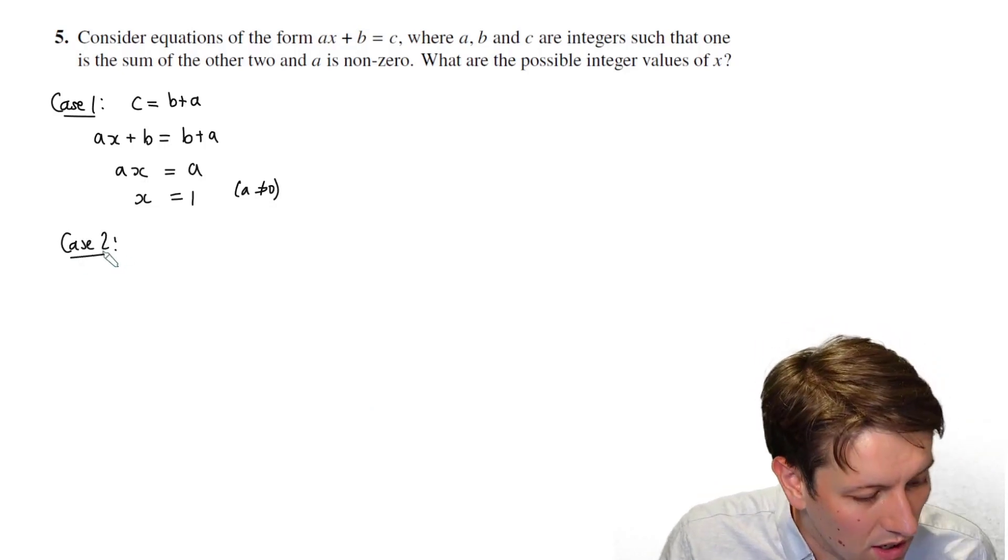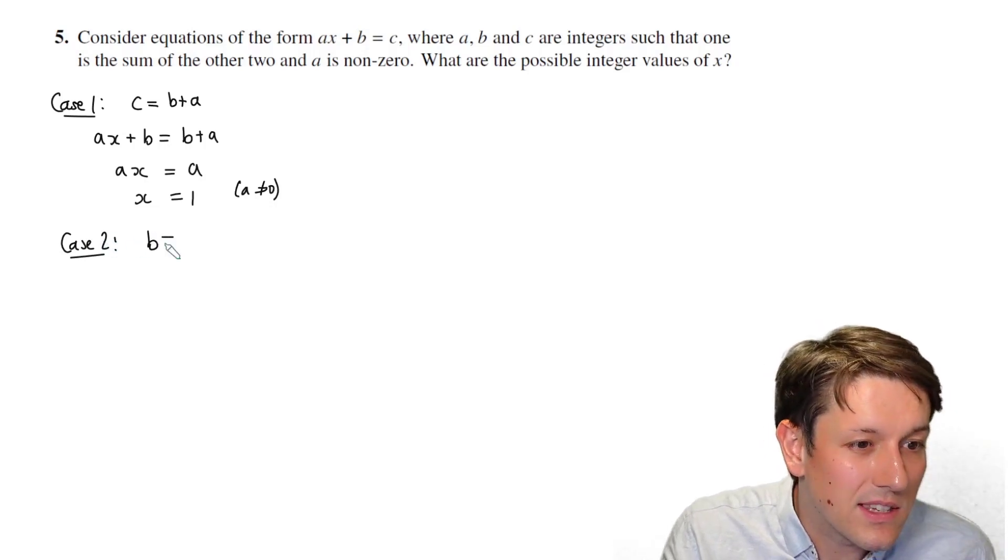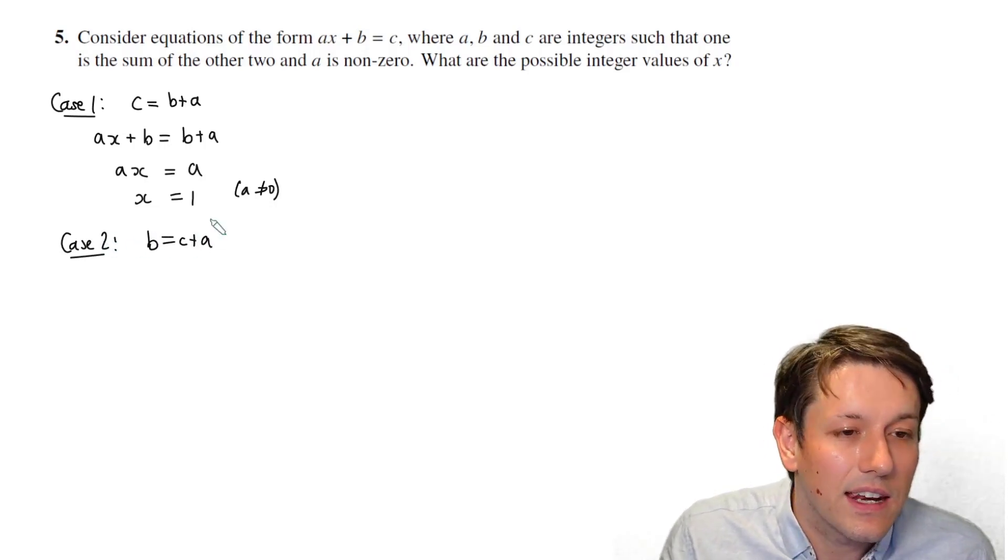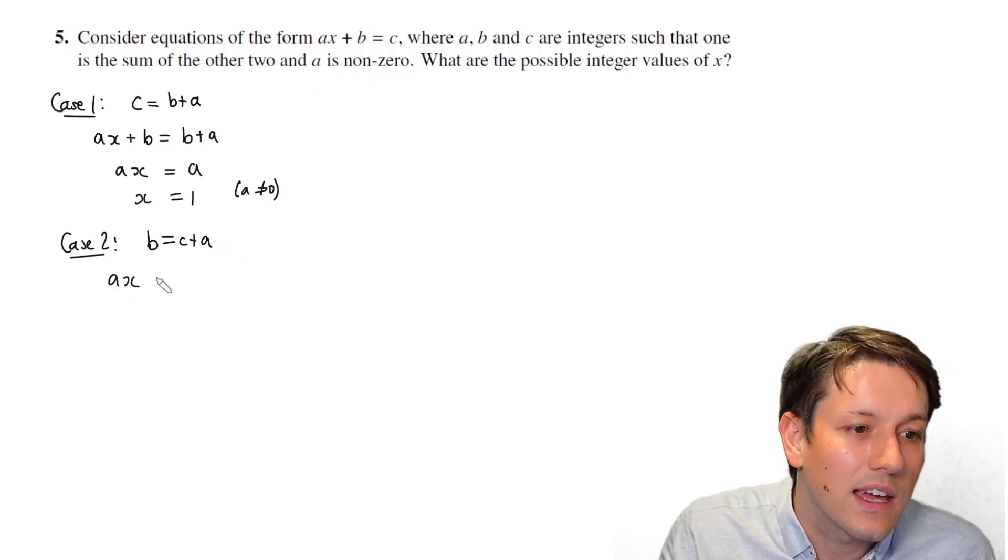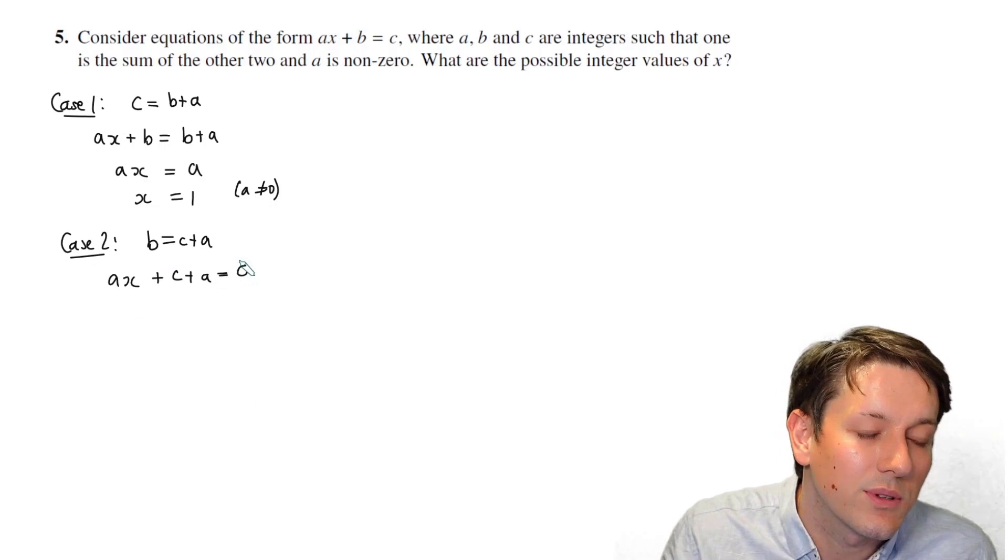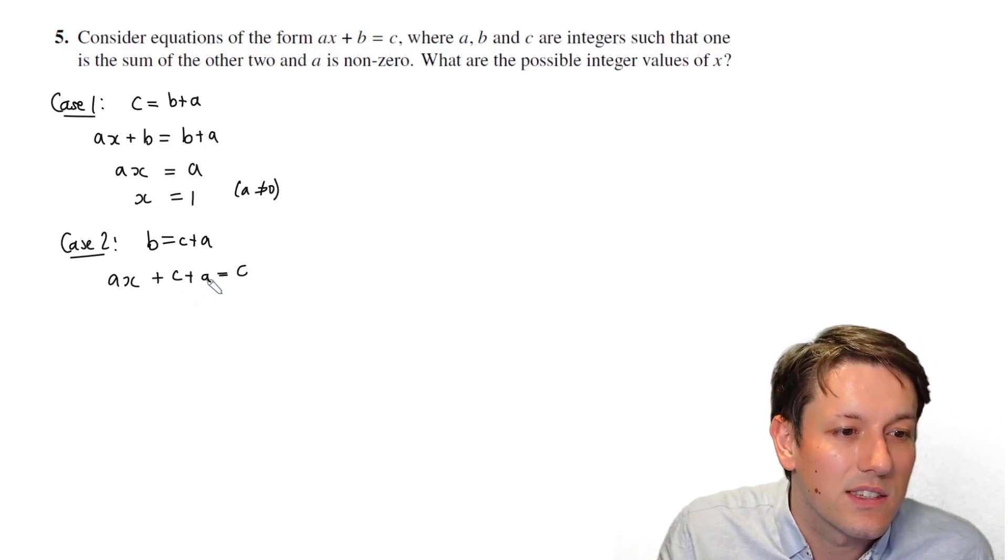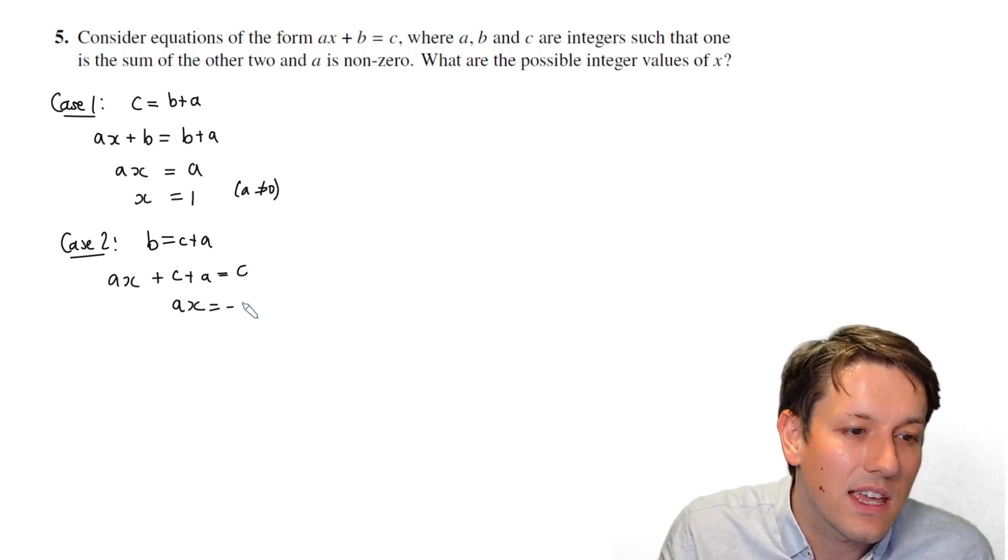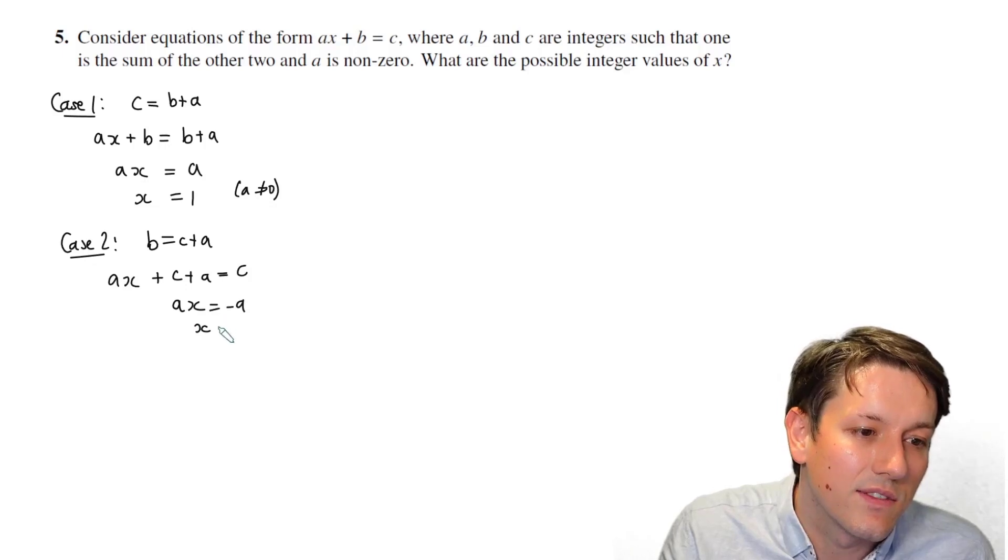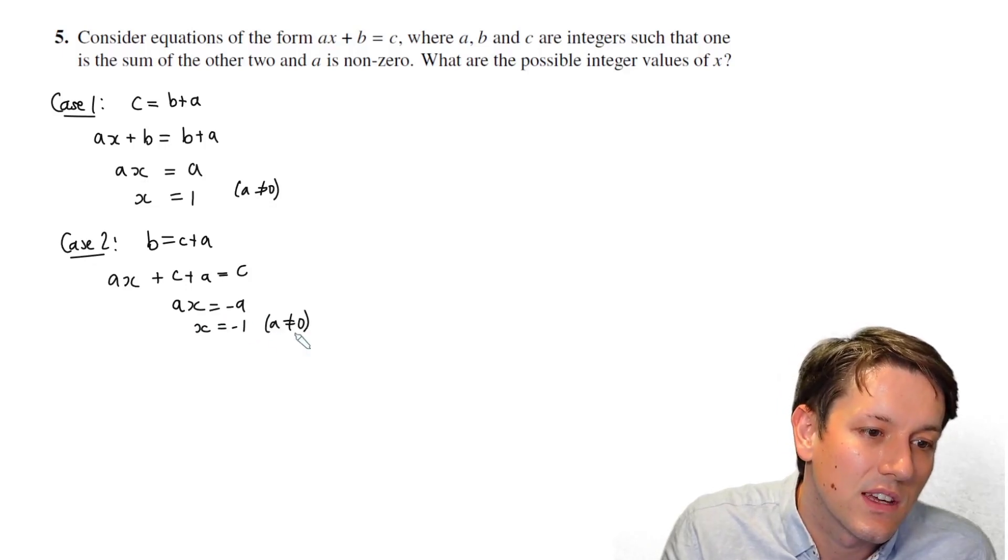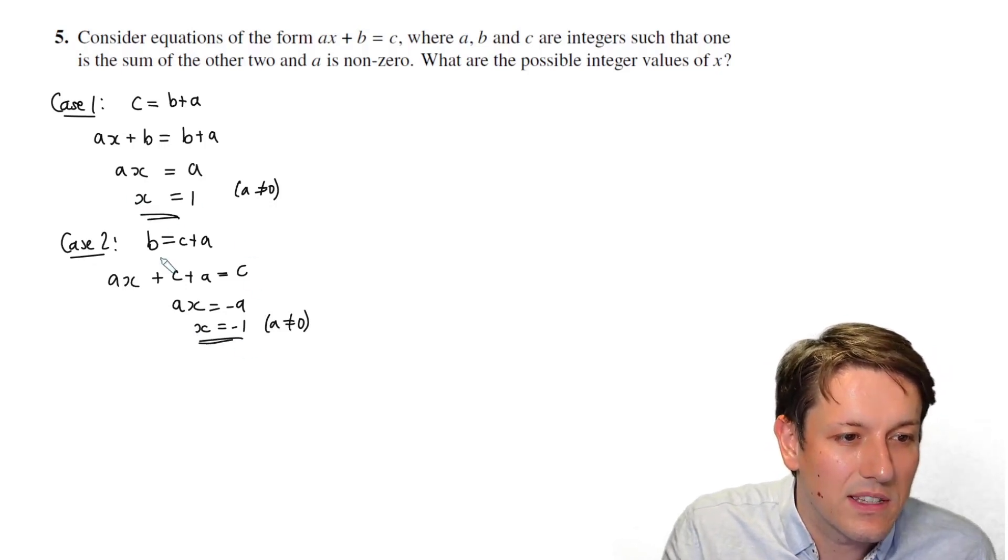Case two is b equals c plus a. If I substitute that in, we've got ax plus c plus a equals c. I subtract the c and also the a, and that gives ax equals minus a. Divide by the a again to get x equals minus one, because a is not zero. So I found two possibilities.